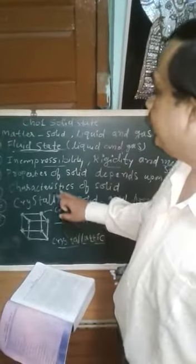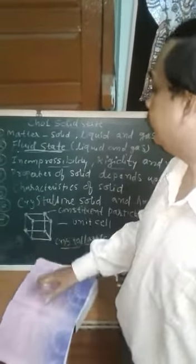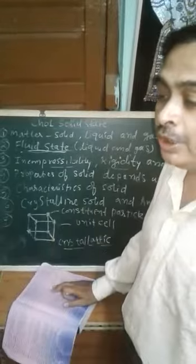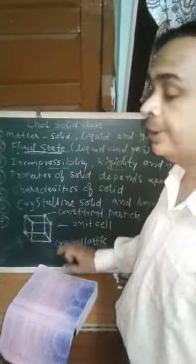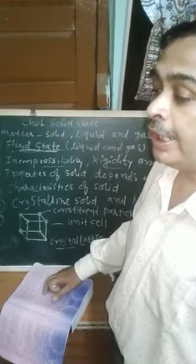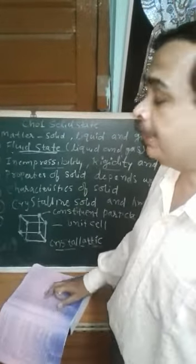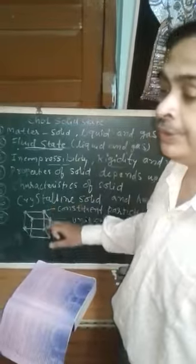Solids can be classified into two types: first is crystalline solid, second is amorphous solid. First we learn about crystalline solid. Crystalline solid is that solid in which atoms, molecules or ions are arranged in a definite pattern. They have a definite geometry. These are called crystalline solids.